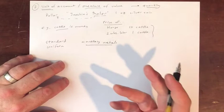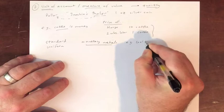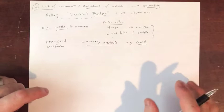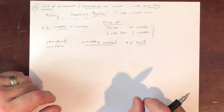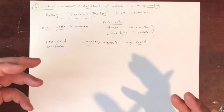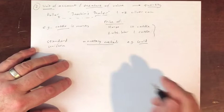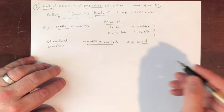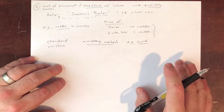Gold is the undisputed king of commodity money. If you picture a treasure trove, you're probably thinking of something involving gold — because there's a very long history of societies all over the world using gold. Gold can be highly standardized; historically, gold used as a monetary metal is held to a certain purity, a certain fineness.